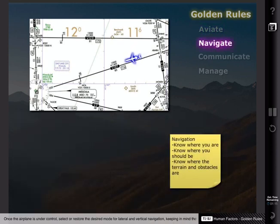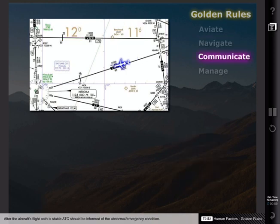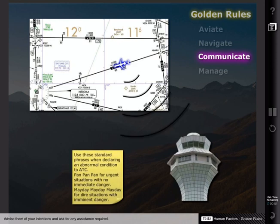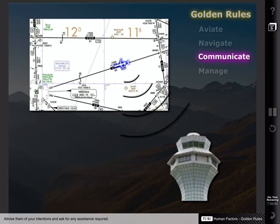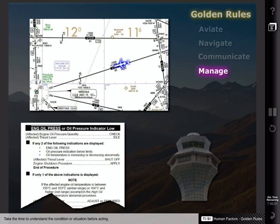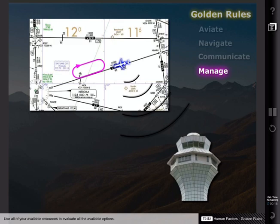Once the airplane is under control, select or restore the desired mode for lateral and vertical navigation, keeping in mind the terrain and minimum safe altitude. After the aircraft's flight path is stable, ATC should be informed of the abnormal or emergency condition. Advise them of your intentions and ask for any assistance required. The next priority is to manage the aircraft's systems and conduct the appropriate abnormal or emergency procedure. Take the time to understand the condition or situation before acting, as incorrect decisions are frequently the result of an incorrect identification of the problem. Take the time to assess the situation by requesting radar vectors or a holding pattern.